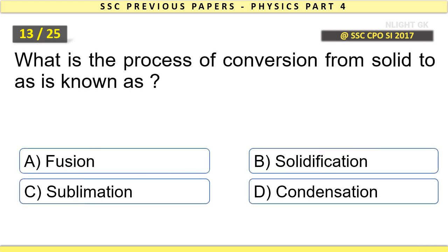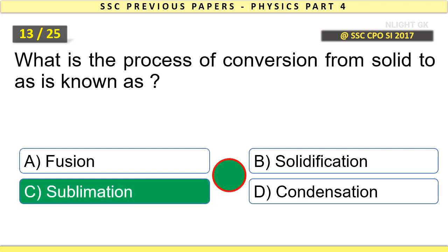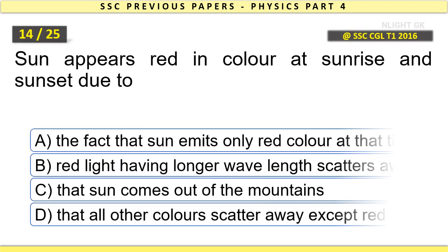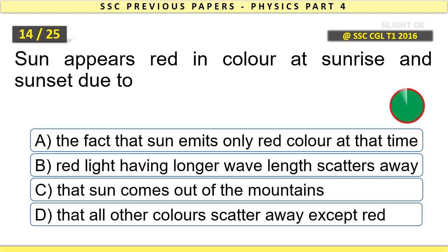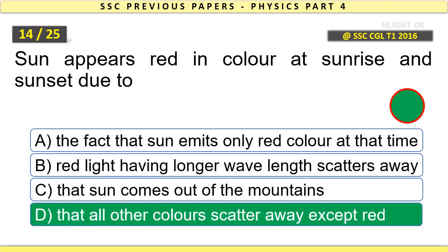What is the process of conversion from solid to gas known as? Sublimation. Sun appears red in color at sunrise and sunset due to that all other colors scatter away except red.